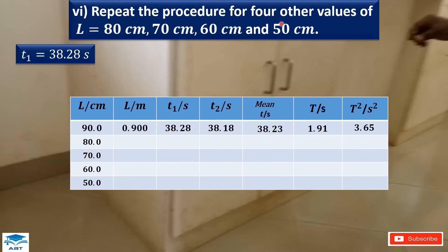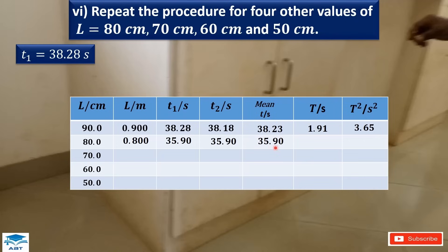Repeat the procedure for four other values of length: L = 80 cm, 70 cm, 60 cm, and 50 cm. For each length, change the inextensible string, record the time for 20 complete oscillations twice, find the average of the two times, determine the period, evaluate the period squared, and tabulate the results.